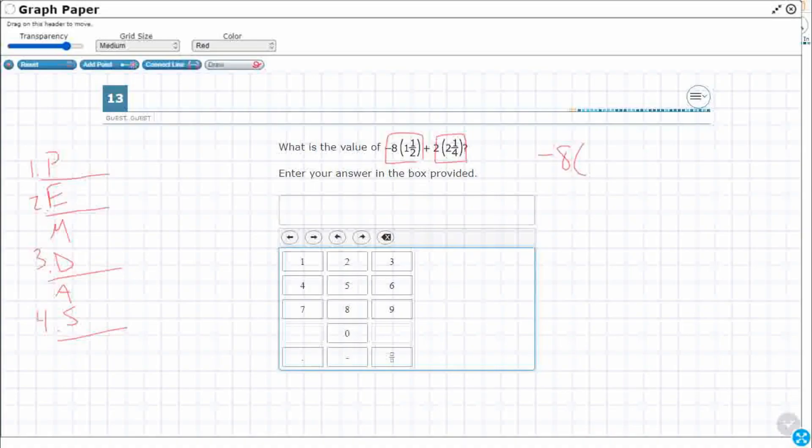So negative 8, and I'm going to convert that 1.5. So I know that 1.5 is the equivalent of 3/2 because 0.5 is just 1/2.